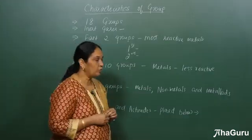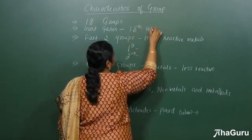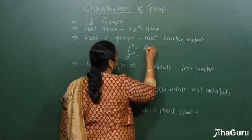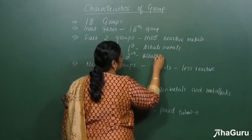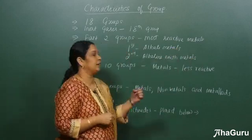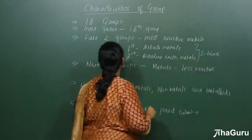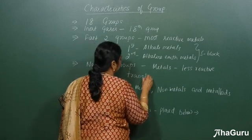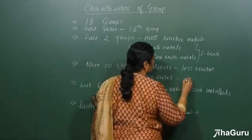There are totally 18 groups in the modern periodic table. The inert gases are placed in the 18th group. The first two groups are the most reactive metals: the first group are called the alkali metals and the second group elements are called the alkaline earth metals. As per the electronic configuration, the last electron enters the s-subshell, so they are also called the s-block elements. The next 10 groups have metals which are less reactive — they are called the transition metals — and the last electron enters the d-subshell, so they are also called the d-block elements.